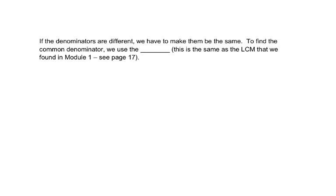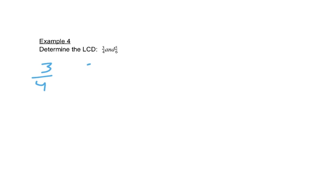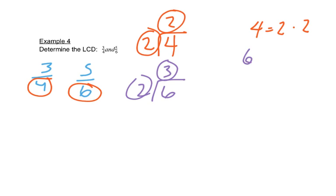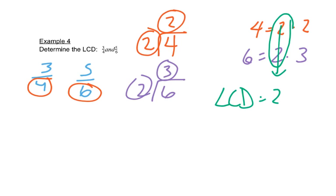Now if the denominators are different, we have to make them the same. To find a common denominator we use the LCD — least common denominator. This is the same as the least common multiple from module one, so you can look back at page seventeen if you need a reminder. For three fourths and five sixths, we find the prime factorization of four — that's two times two — and the prime factorization of six — that's two times three. We write what's common once and everything else that's left. So the LCD is two times two times three, which is twelve.